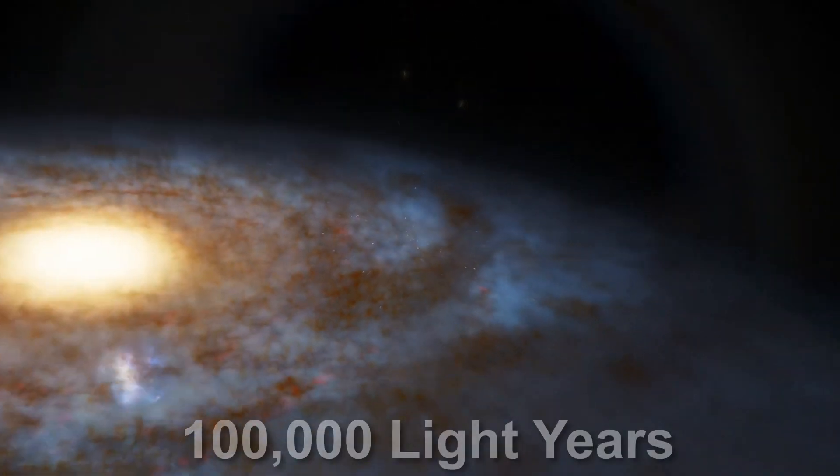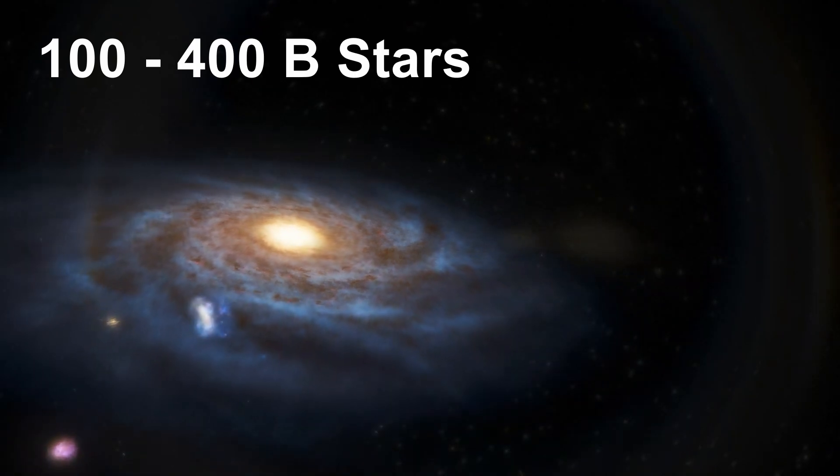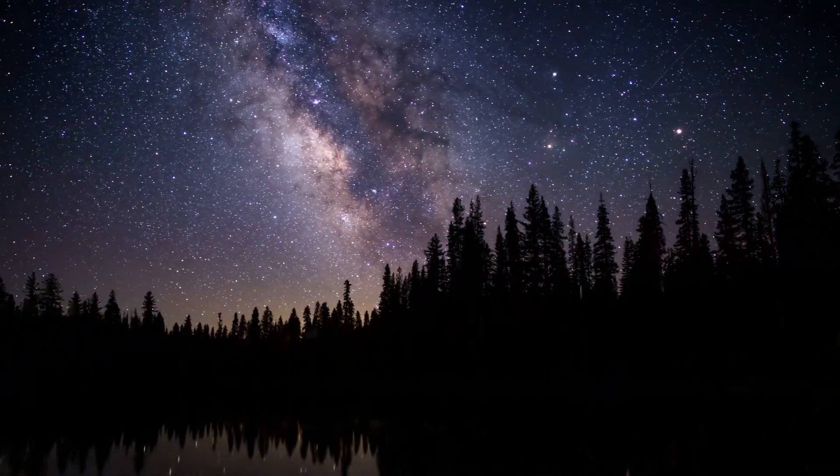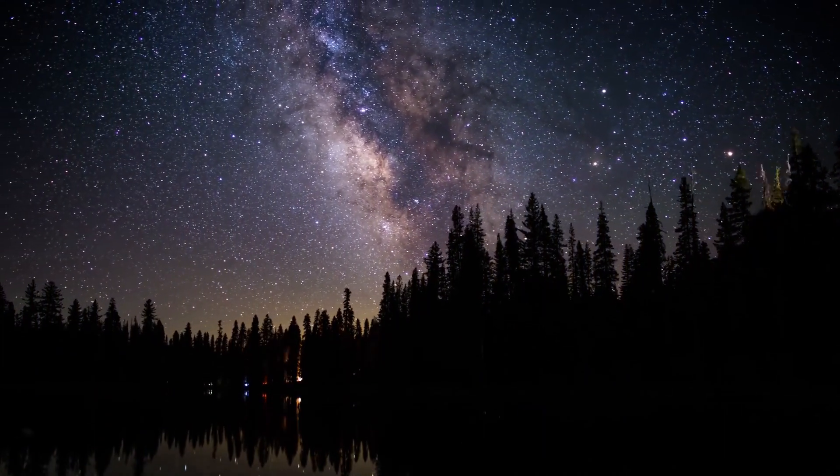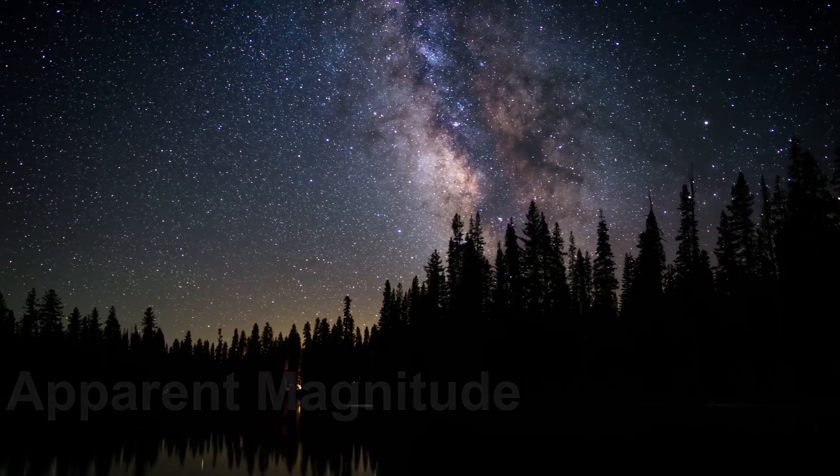The Milky Way galaxy, which is 100,000 light-years across, contains anywhere from 100 billion to 400 billion stars of varying types. What determines how many stars we see at night is their brightness as it appears to us, which is a measure known as apparent magnitude.